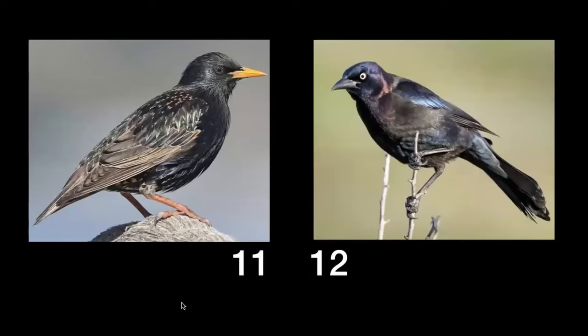Numbers eleven and twelve: Starling or Common Grackle? The Common Grackle has a golden ring around its eye, black legs, and a black bill. The Starling has a yellow bill and no black legs. Both are metallic and shiny but the Grackle has more of a head shine while the Starling is shiny all the way through.